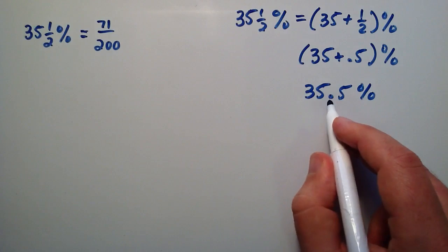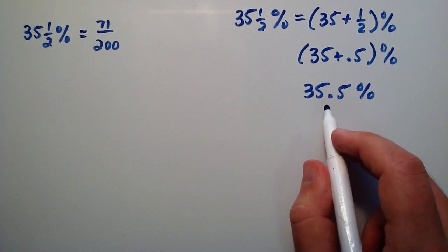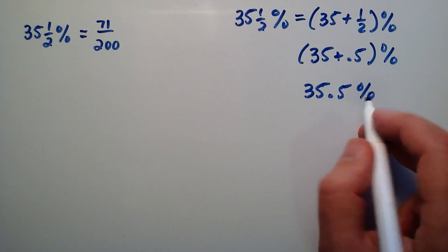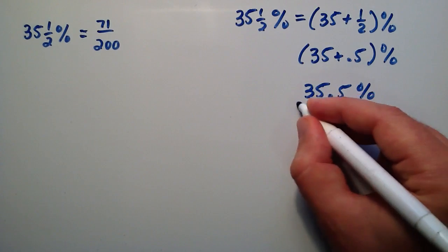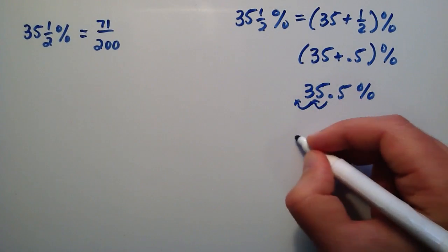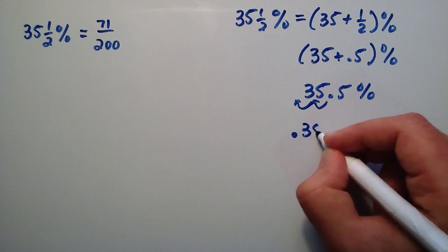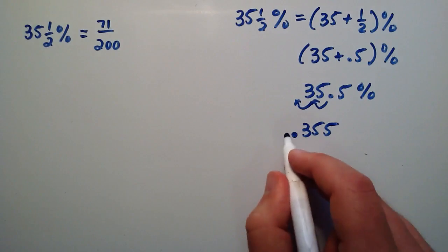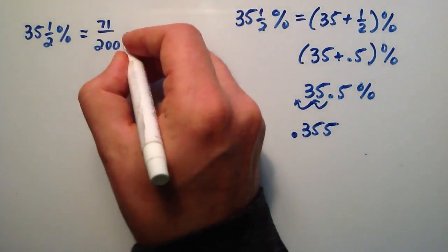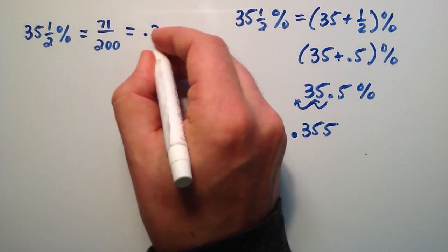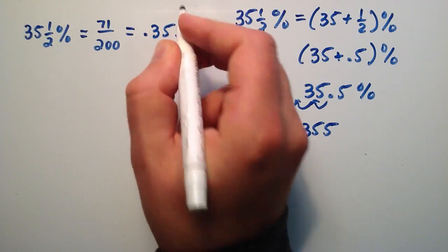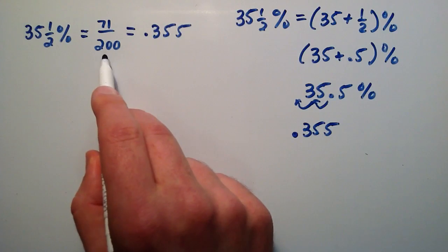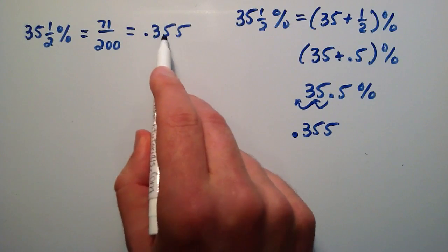So now what we do to change this into decimal form is we simply move the decimal place two units to the left and get rid of the percent sign. 1, 2 puts it right there. So we have 0.355 and we get rid of the percentage sign. And so this is equivalent to our original expression 35 and 1 half. And you can actually take 71 divided by 200, plug it into your calculator and you'll get the answer 0.355.